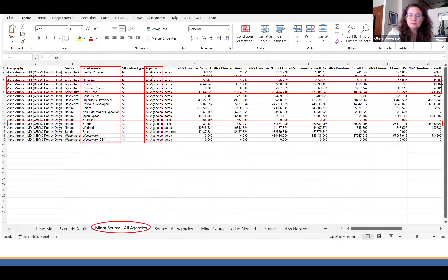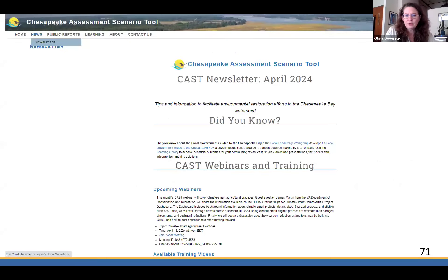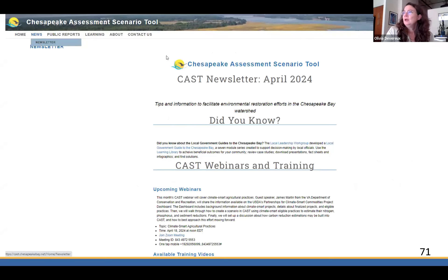The next thing I wanted to go over are the resources, fairly quickly so there's plenty of time for questions. If you go to the homepage — anybody can access this without logging in — you can go to News, see newsletters, and find other information. We send out a monthly newsletter to people who have created a login. That way we have your email. We'll send you a newsletter with user tips, upcoming webinars, and other information. You might want to get a login if for no other reason than to get the newsletter.